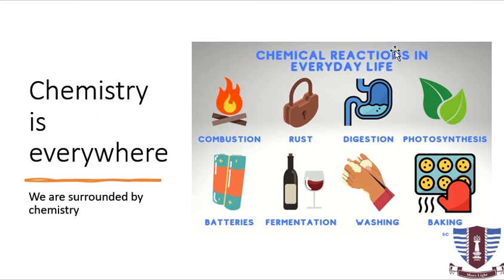Digestion in our bodies — in animal bodies, in human bodies — is also a chemical process. The food we eat consists of a lot of chemicals; some are simple and others are complex. During the process of digestion, our body secretes enzymes, which are also chemical entities. These enzymes break down the complex parts of food into simple molecules or simple fragments that are easy to absorb in our body.